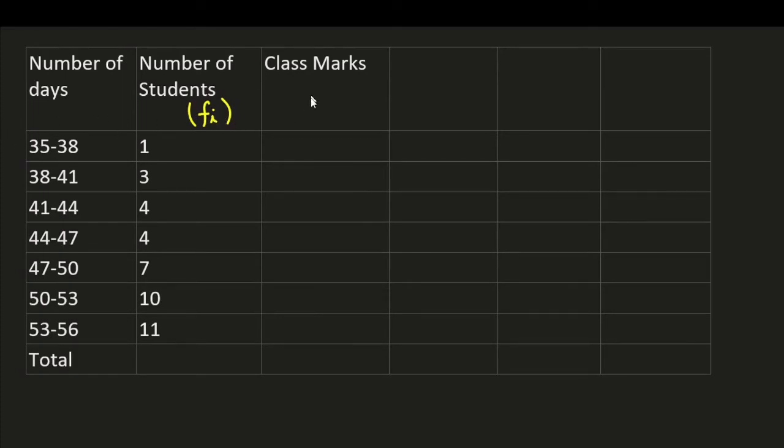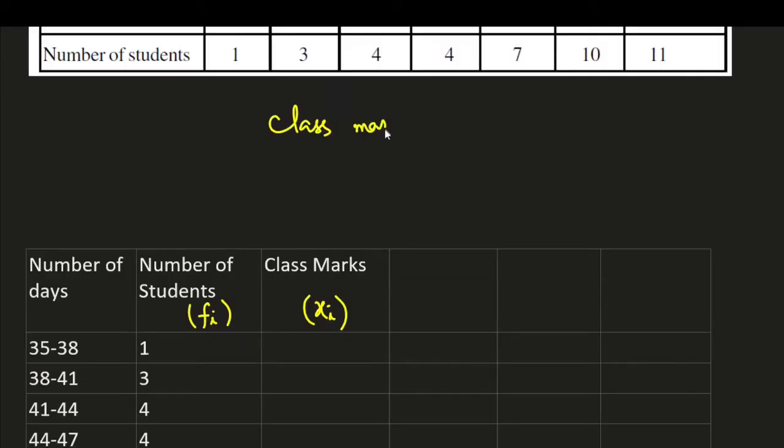Let us find class marks, the midpoints. We have 35 to 38. Class mark for first one is equal to 35 plus 38 by 2. In this way we can find, or we can find class size. Class size is 38 minus 35, that is 3.